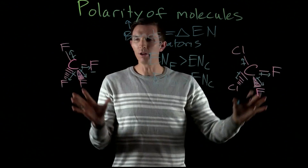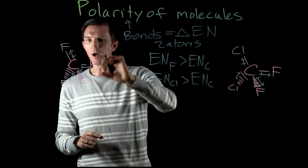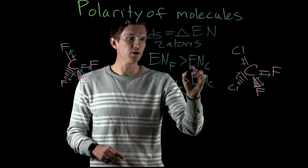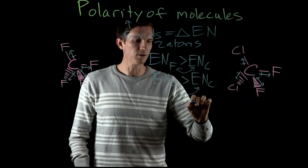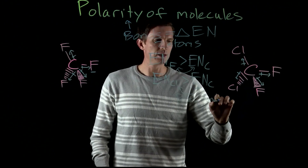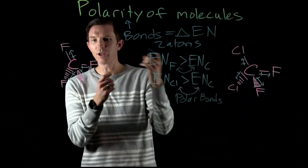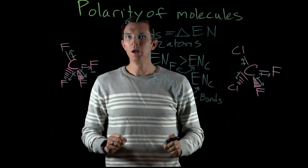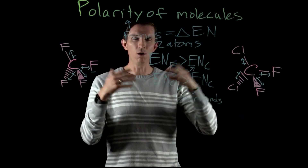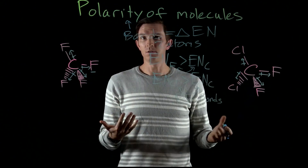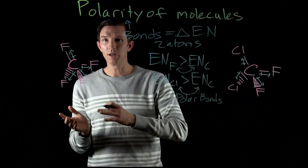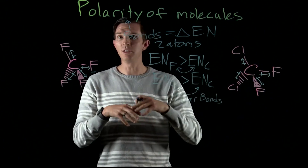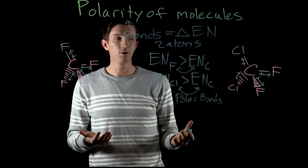Now, what does this mean for the overall molecule? Each of our bonds is polar because there's a difference in electronegativity — there exists a pull of electrons toward one atom versus the other. But when looking at a full molecule, we need to consider what happens to the overall electron density — is it pulled toward one side or not? To determine this, we have to consider not just individual bonds but also the geometry and shape of the molecule.